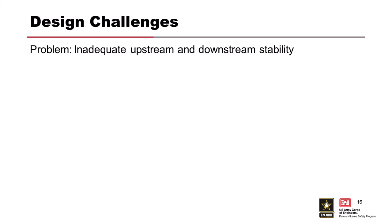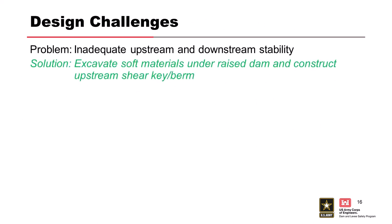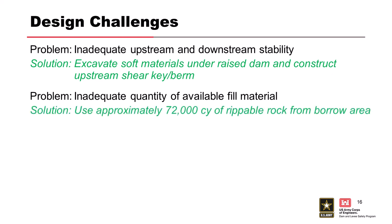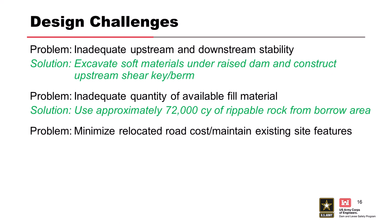Reviewing the design challenges: inadequate upstream and downstream slope stability was addressed by excavating the soft material and constructing the upstream shear key and berm. Inadequate availability of fill material for the shell was solved by using rippable rock combined with other materials. Road relocation cost and maintaining existing features required the road to come up the downstream slope of the dam and then run parallel with the reservoir.